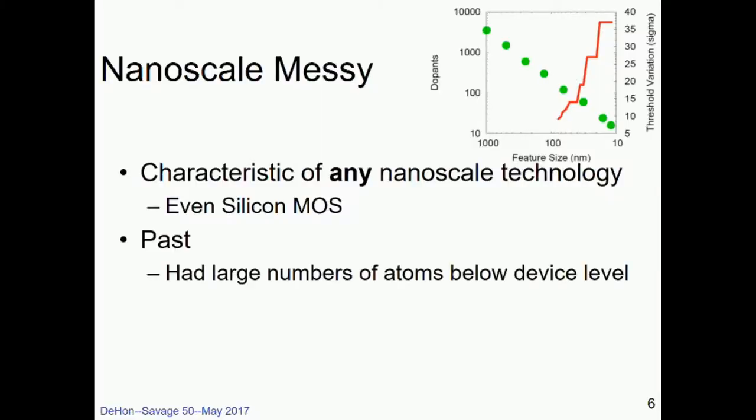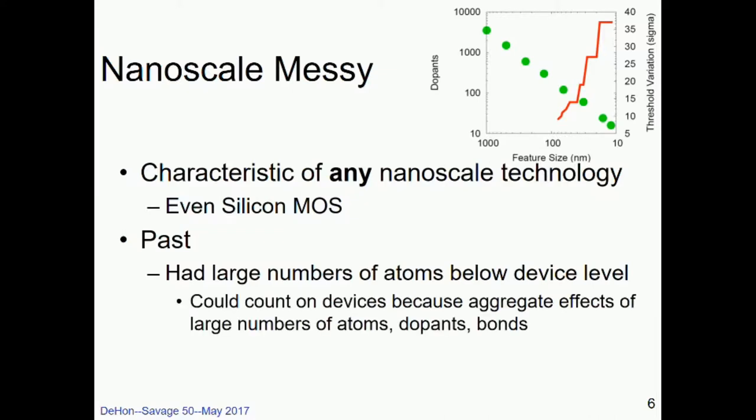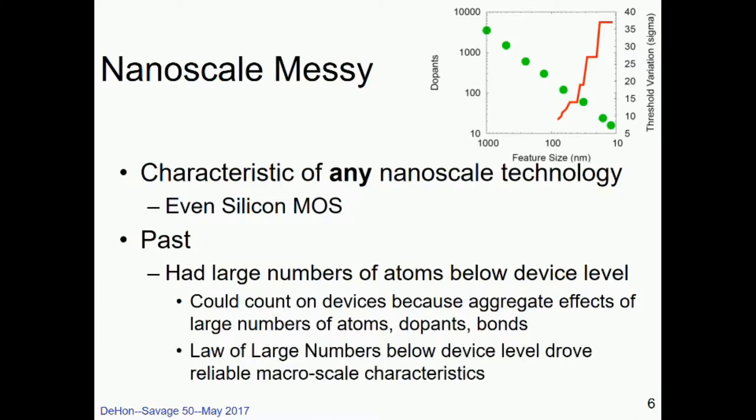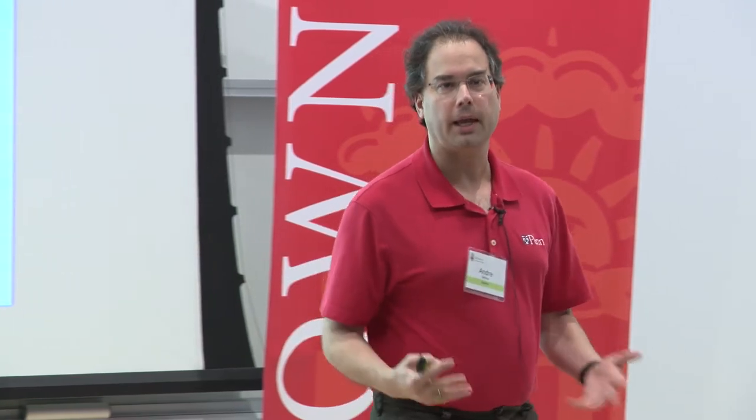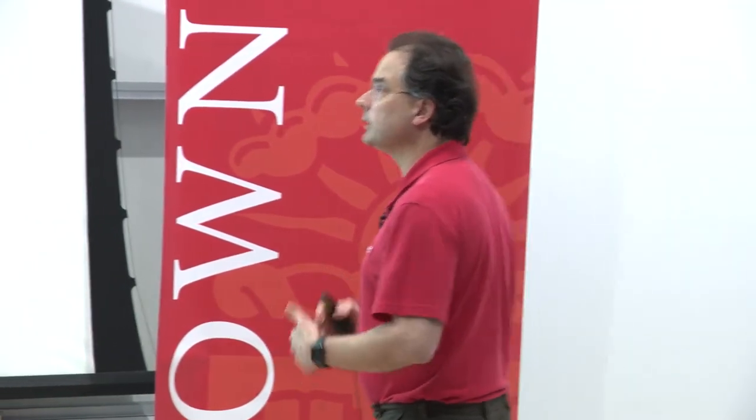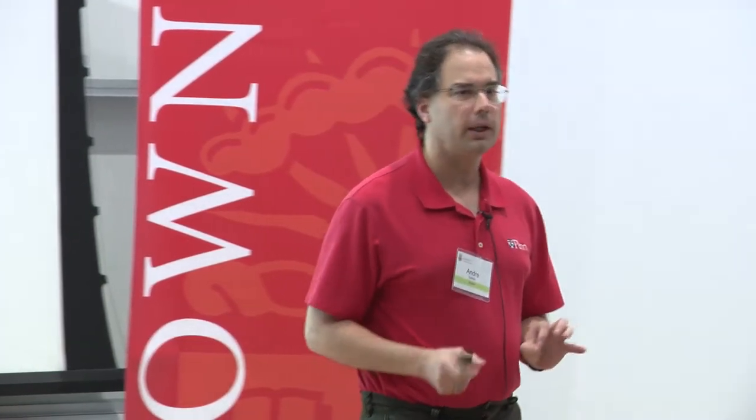So essentially, the idea is that in the past, what we had was a large number of atoms below the device level. And since we had a large number of atoms below the device level, we could reasonably ask the technologists, the applied physicists, the device people to build reliable devices. So we could count on these devices because of the aggregate effects of very large numbers of atoms or dopants or bonds. Essentially, we had law of large numbers, good complexity, combinatorics below the device level that drove really reliable macro scale behaviors in our devices. When we had thousands and tens of thousands of dopant atoms, things were pretty consistent.